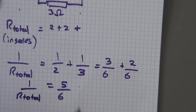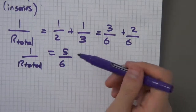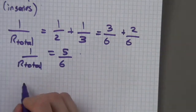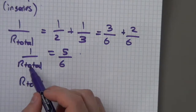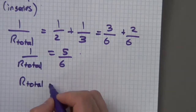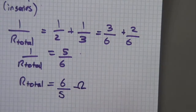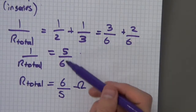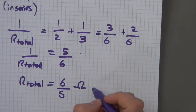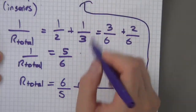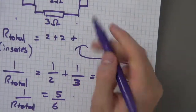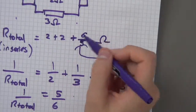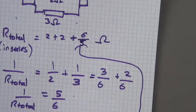So five over six equals one over R_total. A common mistake is thinking five over six is your R_total — it isn't. You need to flip it, making R_total equal to six over five ohms. Now I fill in the blank: the total series resistance is two plus two plus six over five, which gives four and six-fifths.